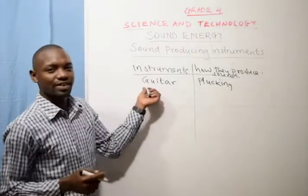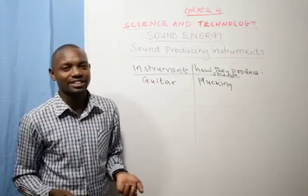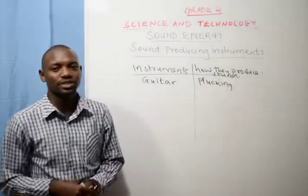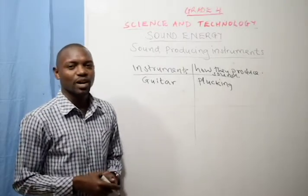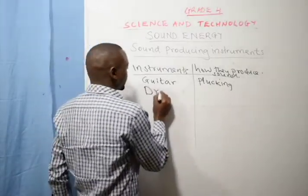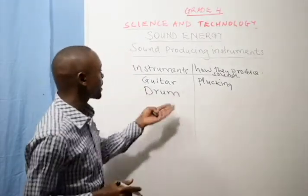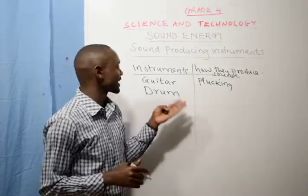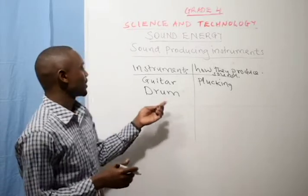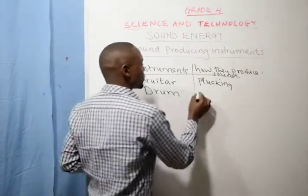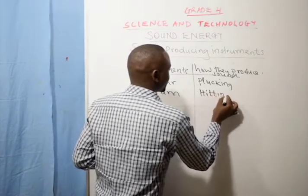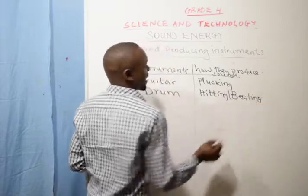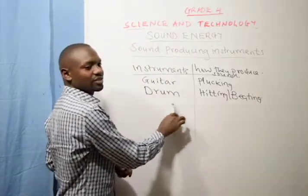A guitar is an instrument that has wires — it is just a box with wires. So once you pluck those wires using your fingers, it will produce sound. Another musical instrument we have is the drum. A drum produces sound when you beat it.